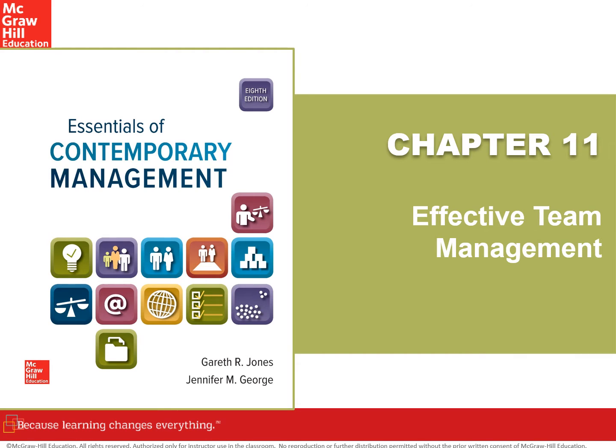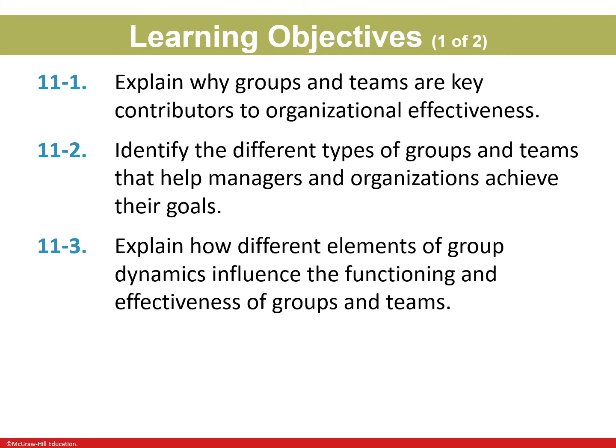This is Chapter 11: Effective Team Management. It is one of the shorter chapters in the book and the last chapter before the exam — Chapter 12 is there just for your own knowledge. The learning objectives are: explain why groups and teams are key contributors to organizational effectiveness, and identify the different types of groups and teams.